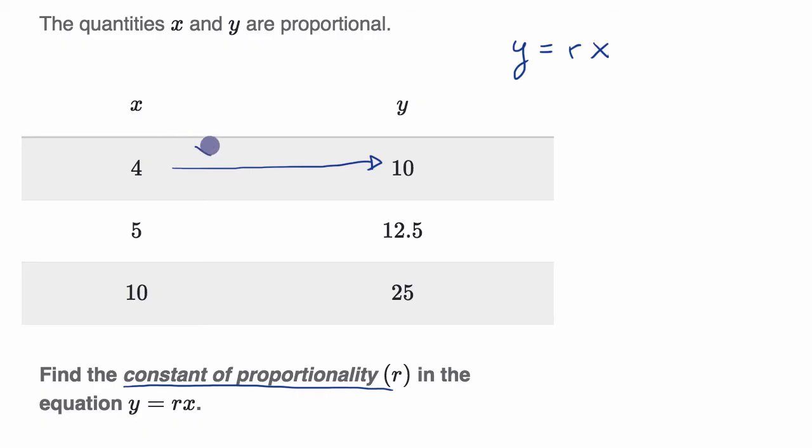Well, if you multiply it by 10 fourths, then you're gonna get to 10. And 10 fourths is the same thing as multiplying it by two and a half. So this is times two and a half.